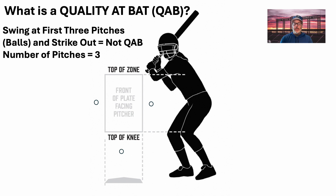And you struck out. That's not a quality at bat for a few reasons. One: you swung at pitches outside of the zone, so if you didn't swing at those pitches, you would have a three-ball count — one pitch away, one ball away from being walked and getting on base.